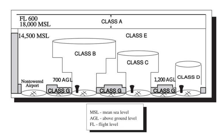Special use airspace, or special area of operation, is the designation for airspace in which certain activities must be confined, or where limitations may be imposed on aircraft operations that are not part of those activities. Certain special use airspace areas can create limitations on the mixed use of airspace. The special use airspace depicted on instrument charts includes the area name or number, effective altitude, time and weather conditions of operation, the controlling agency, and the chart panel location. On National Aeronautical Charting Group en route charts, this information is available on one of the end panels.